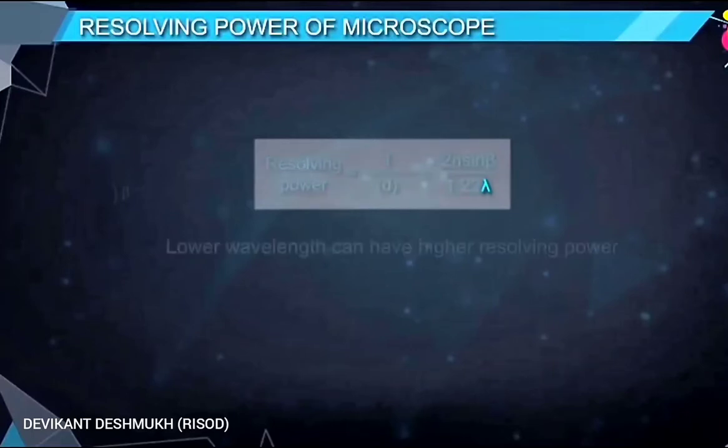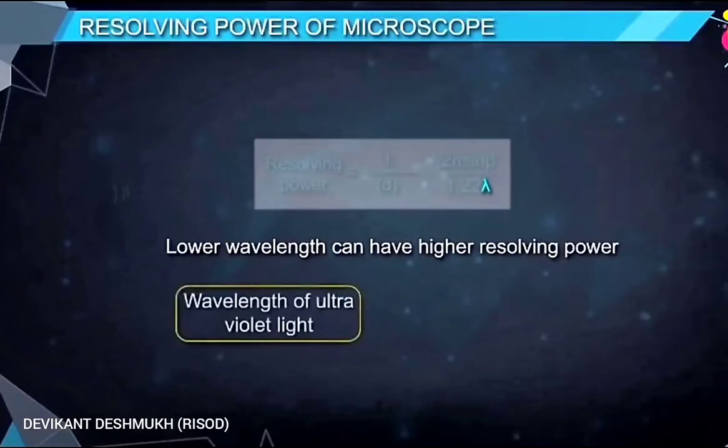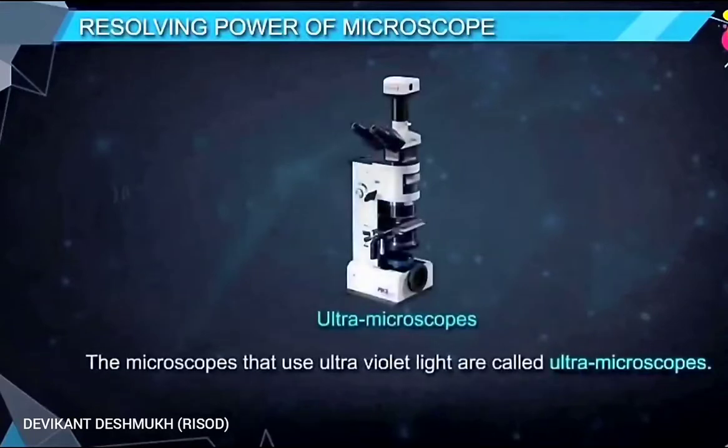Resolving power is inversely proportional to wavelength. Therefore, lower the wavelength can give higher resolving power. We know wavelength of ultraviolet light is smaller than visible light. Therefore, ultraviolet lights are used to achieve high resolving power. Such microscopes are called ultra-microscopes.